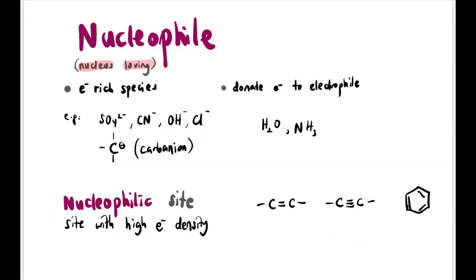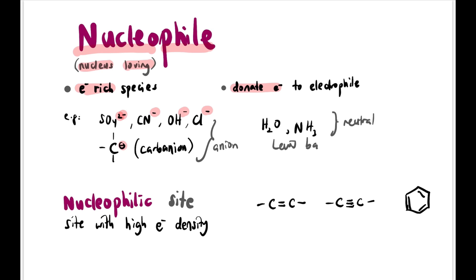A nucleophile means 'nucleus loving' — it loves nuclei because it is an electron-rich species. It donates electrons to the electrophile in a reaction. Electron-rich species include anions (negative charge) or neutral compounds that are Lewis bases with an extra lone pair, such as H2O and NH3.